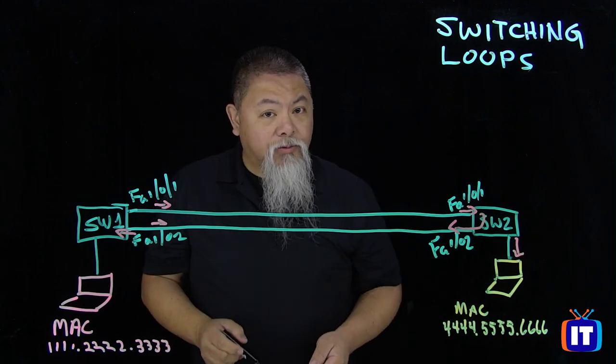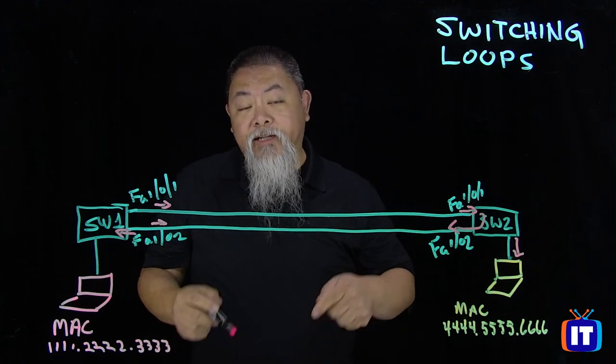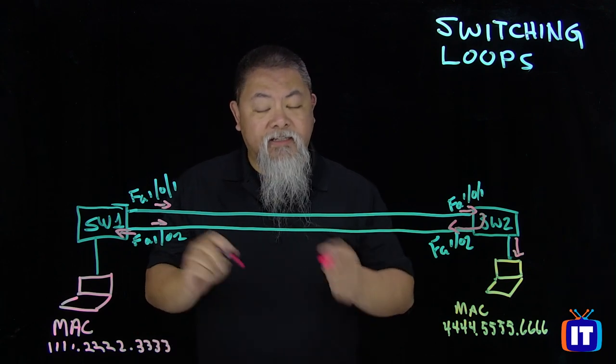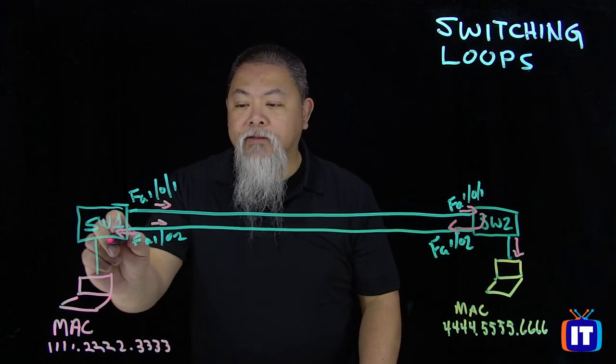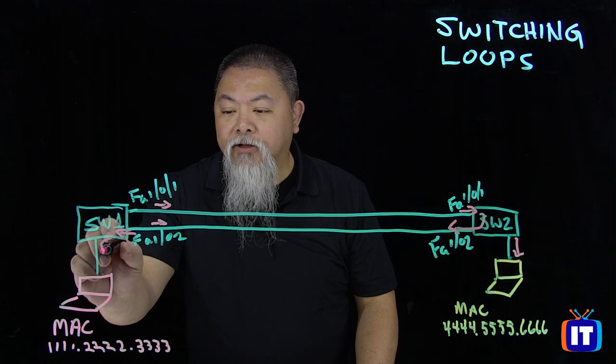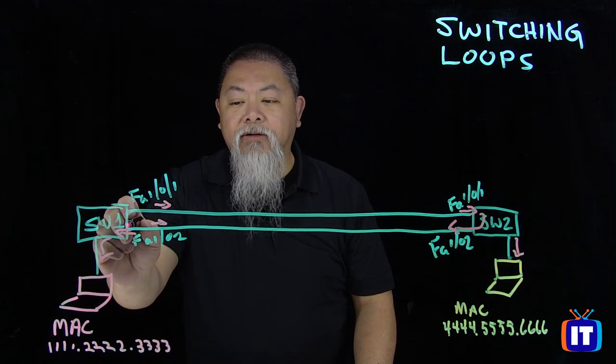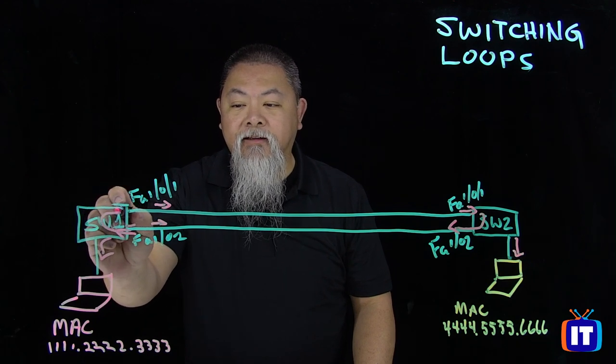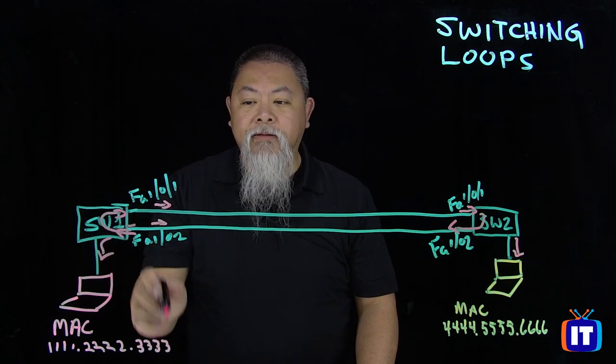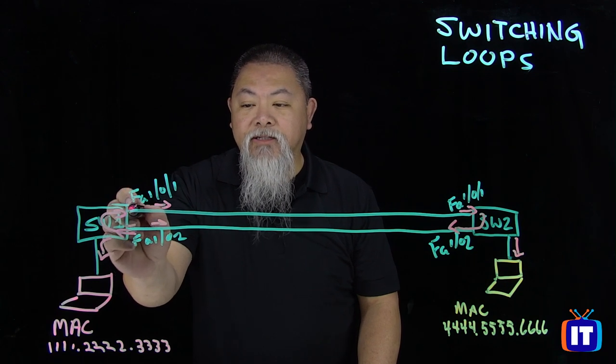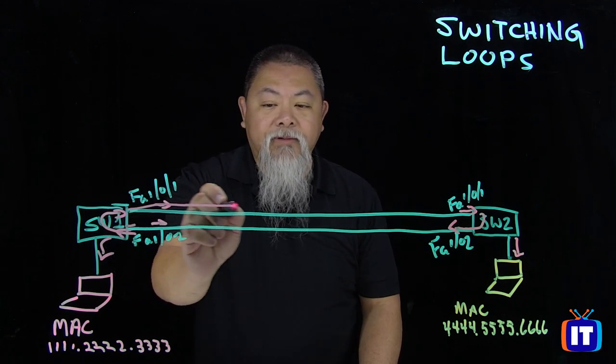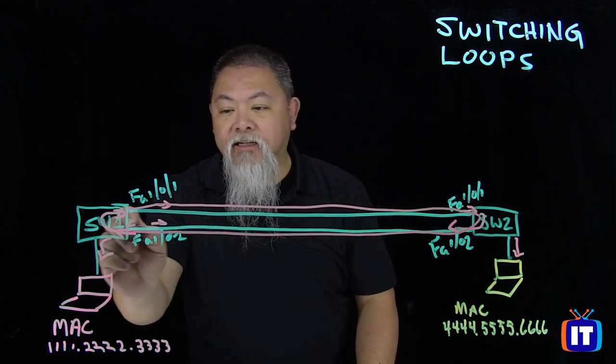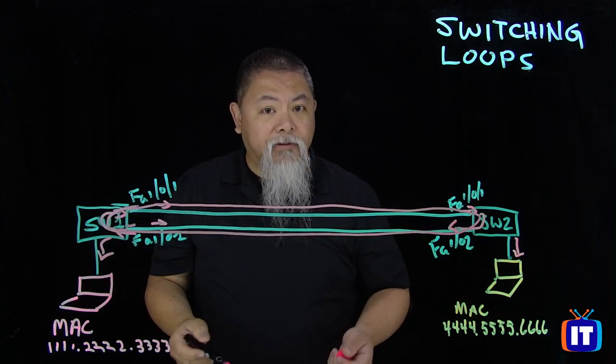Well, remember what Switch 1 does. Switch 1 will actually say, hey, it's a broadcast. Let me send it out every other interface except for the one it came in on. So that means that it will also get its broadcast here, but now it doesn't see it as being the same packet. It sees it as actually being this packet over here. So what did we end up with as we started off? We now have a loop that continues to go around and around and around.